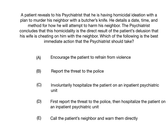Case twelve: A patient reveals to his psychiatrist he's having homicidal ideation with a plan to murder his neighbor with a butcher's knife, detailing a date, time, and method. The psychiatrist concludes the homicidality stems from a delusion that his wife is cheating on him with the neighbor. Which of the following is the best immediate action? A: Encourage the patient to refrain from violence. B: Report the threat to police. C: Involuntarily hospitalize the patient on an inpatient psychiatric unit. D: First report the threat to the police, then hospitalize. E: Call the patient's neighbor and warn them directly. The correct answer is E.